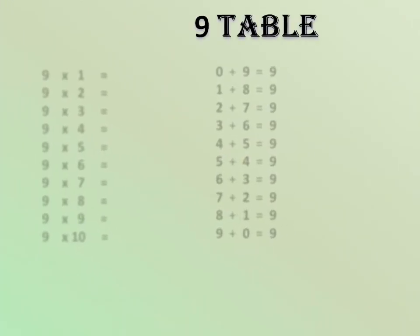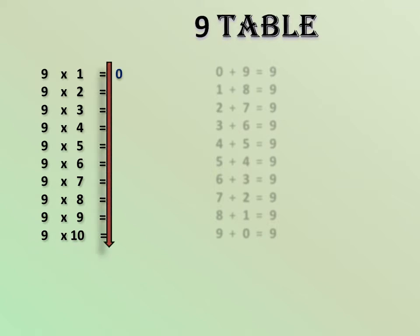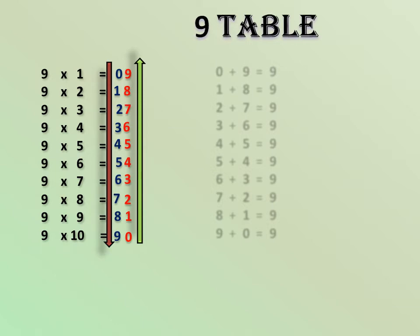Let us see the trick hidden in ninth table. First I am going to fill the tenth place from 0 to 9 numbers from top to bottom in this way. And again, now I am going to fill the numbers in the reverse order, from 0 to 9 in the ones place this way. So our ninth table is completed within fraction of seconds. It is very easy, right?